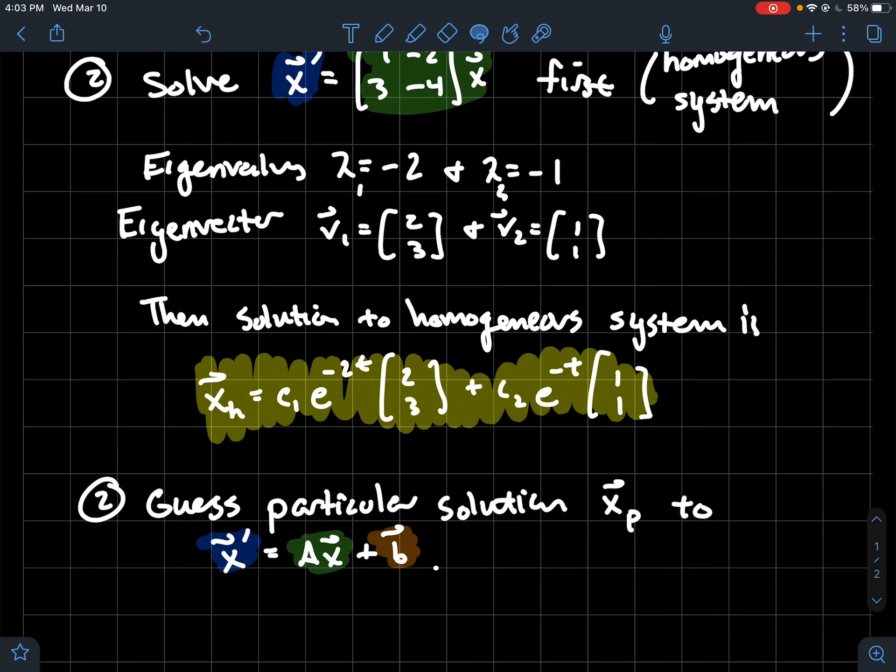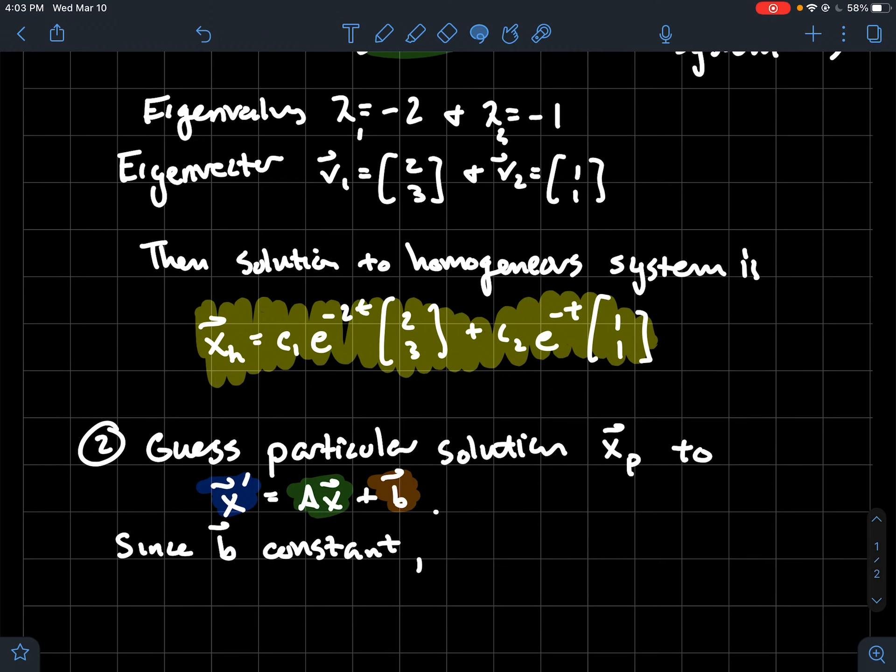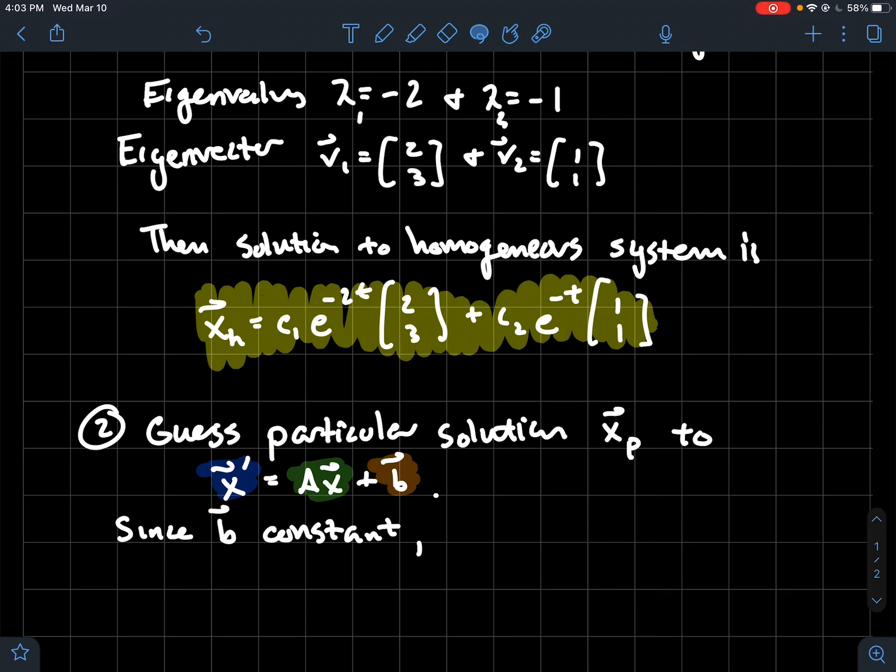You know that b, that thing that makes it non-homogeneous, it's a constant vector. I bet you that probably some constant would solve this equation. Your guess can be modeled after just what is that inhomogeneous piece. It tells you a little bit on how to formulate a guess.